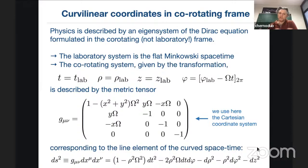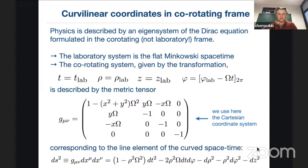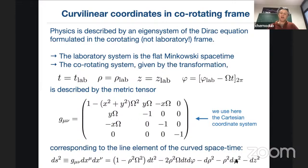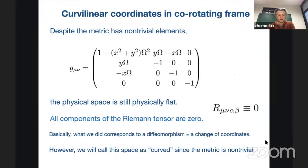Moving to the co-rotating frame is similar to Rindler coordinates for uniformly accelerating systems. The spacetime is flat physically — all components of the Riemann tensor vanish — but the coordinates are curved. Light will feel some curvature because in this coordinate system the metric tensor has off-diagonal components connecting space and time. We write the metric element in this particular frame and can then work with thermodynamics. All components of the Riemann tensor are zero because it's just a change of coordinates, but space appears curved because of the non-trivial metric.